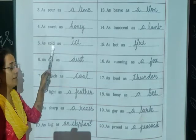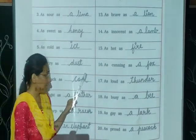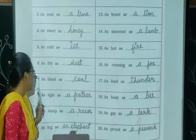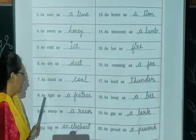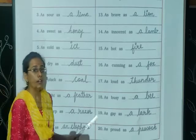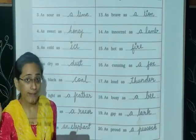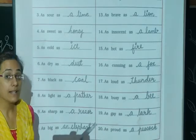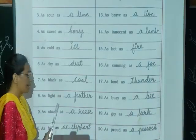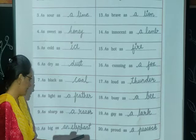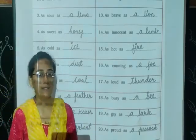As cold as ice. As dry as dust. As black as coal. As light as a feather — light here means not dark, but lightweight. As sharp as a razor. As big as an elephant.